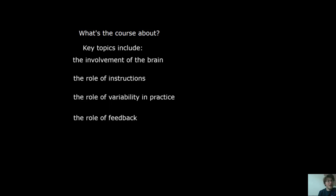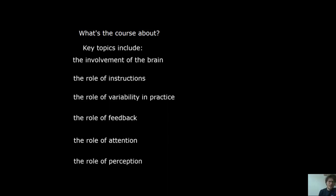We'll look at the role of feedback — how much feedback do you give somebody? Should you give somebody feedback every single time they complete a skill, or only every now and then? Who should give the feedback and what type of feedback should you give about their performance? We'll look at the role of attention — where do we put our attention to optimize the control of our actions? And finally, we'll learn about the ways in which we perceive the world when moving through it and the implications for the design of our practice environments.